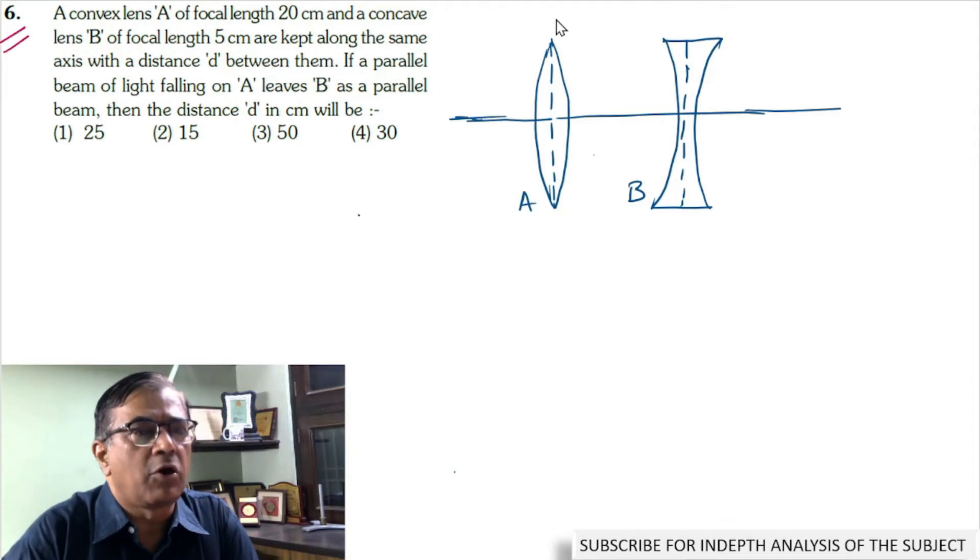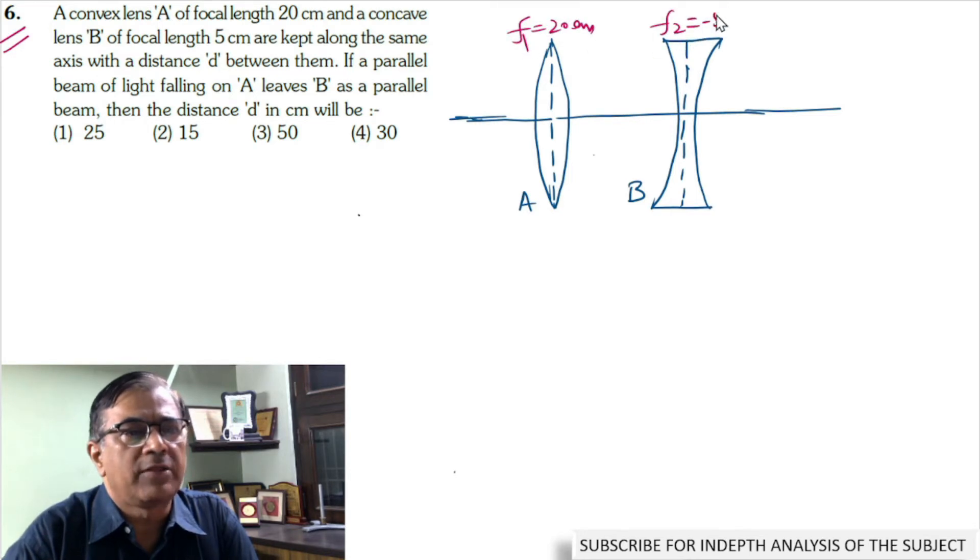In problem number 6, a convex lens of focal length 20 cm and a concave lens of focal length 5 cm are placed coaxially.